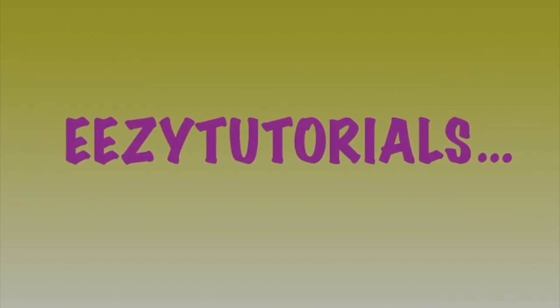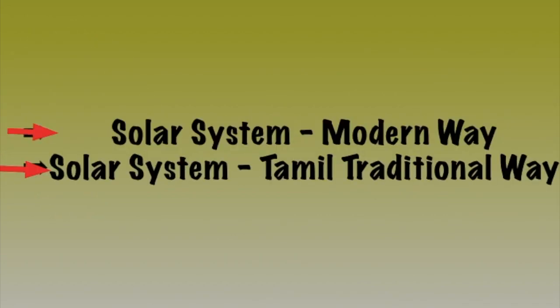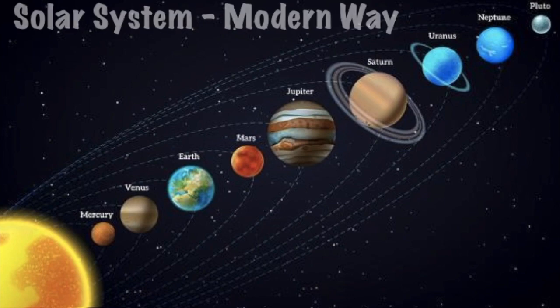Welcome to Easy Tutorials. Let us see the planets in the solar system. They can be classified in two different ways. The first one is based on the modern way and the second one is based on the Tamil traditional way.